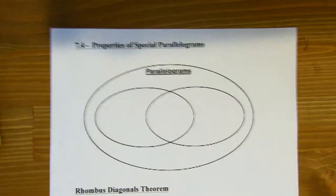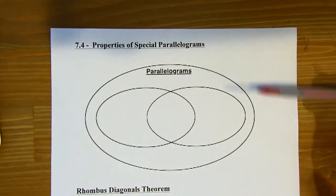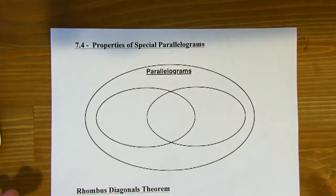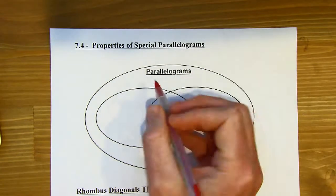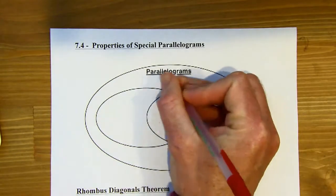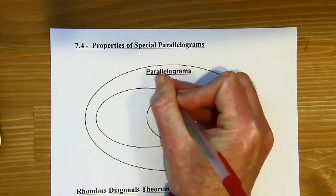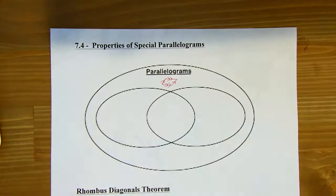Properties of special parallelograms. We're going to look at some subcategories of parallelograms. Let's remind ourselves what a parallelogram is — it's a quadrilateral with two pairs of parallel sides, where both pairs of opposite sides are parallel. I'm going to do a little definition sketch just under where it says parallelograms. So everything within this circle is going to be a parallelogram. This is a Venn diagram.